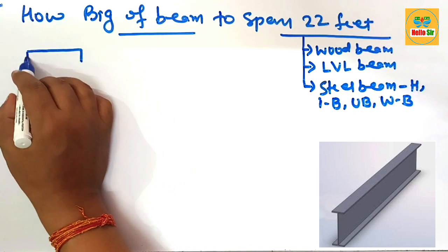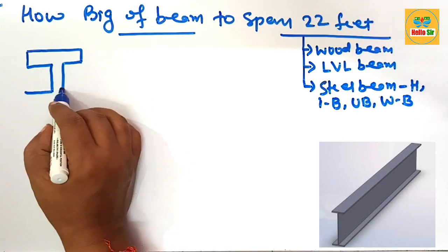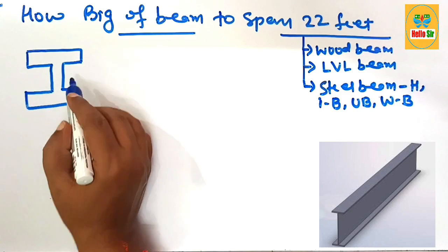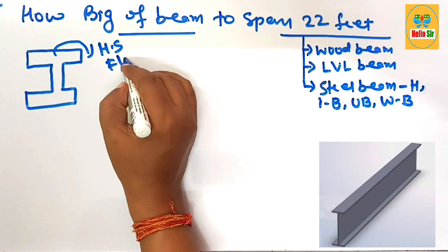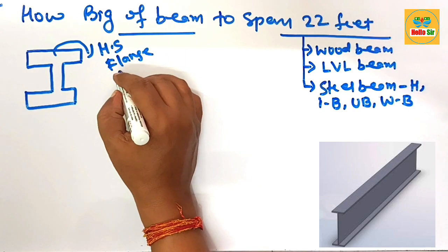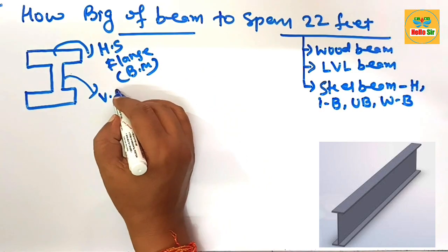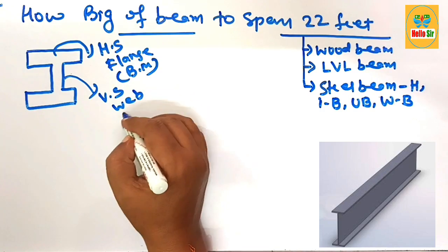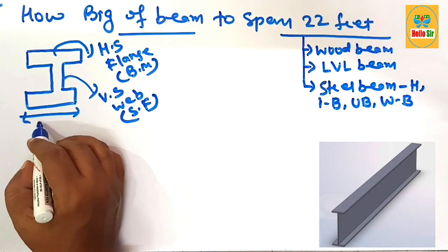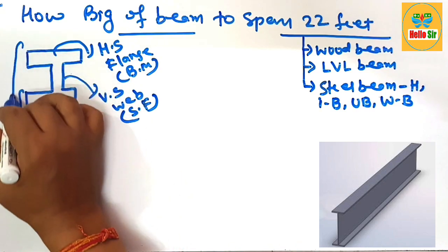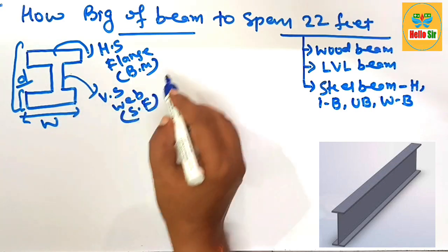Here is a rough diagram to understand the American wide flange beam and its dimensions. The horizontal section is known as the flange, which generally resists the bending moment acting on the beam. The vertical section is known as the web, which generally resists shear forces. Also shown are the width of the flange, the thickness of the flange, and the depth of the steel beam.